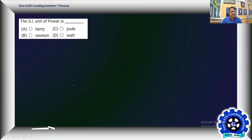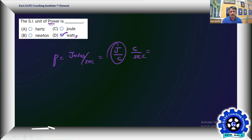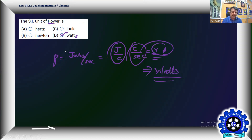The next question: what is the unit of power? By default and standard it is watts. Power is the rate of utilization of energy — joules per second. In circuit analysis, joules per coulomb is voltage and coulombs per second is current, so power equals voltage into current, which gives watts. Power is always joules per second — that's another simple one-mark problem.